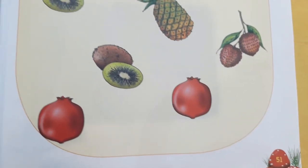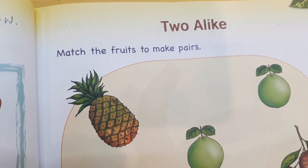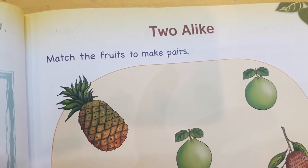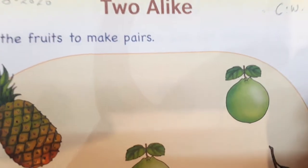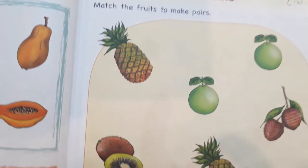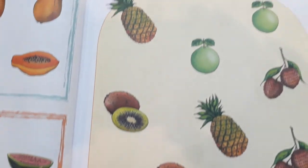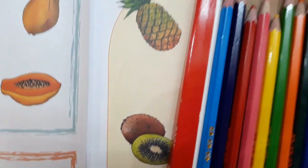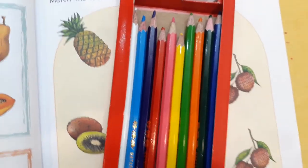So class, please open your Environmental Studies book 1. On page number 51 you will get the topic: two alike. So first we are going to write today's date — 21st August 2020. This is our class work, so I will write CW here. Then the instruction says: match the fruits to make pairs. Some fruits have been given here and we have to match them. For this work you are going to use your pencil colors — different pencil colors for each fruit.